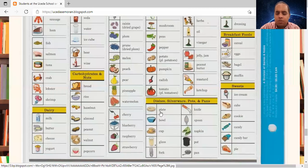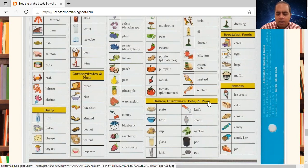Please repeat with me. Dishes. Silverware. Pots and pans. Plate. Bowl. Cup. Glass. Fork. Knife. Spoon. Napkin. Pot. Pan.